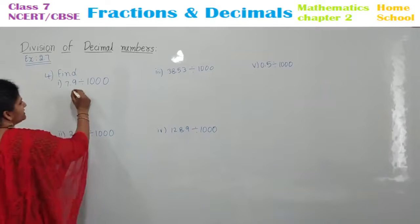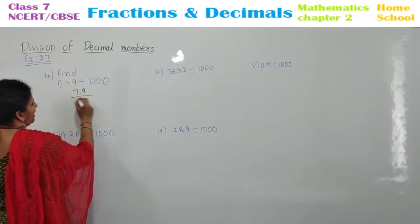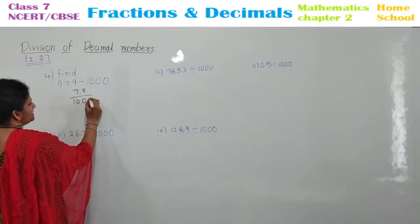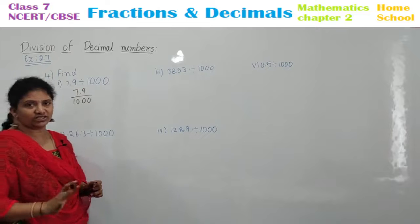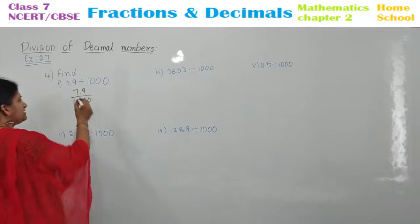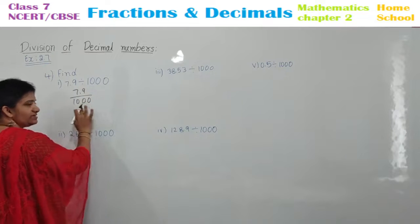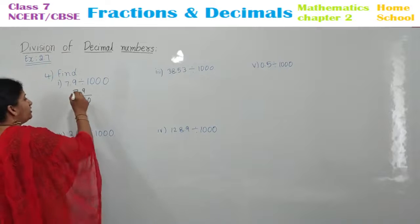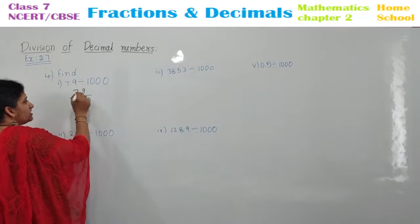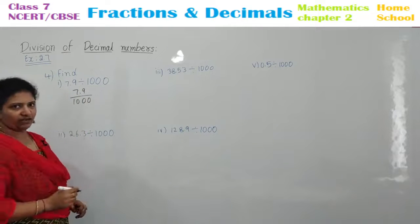Look here: 7.9 divided by 1000. Same pattern, children — it won't change. This decimal point will be shifted. There are three zeros, right? After three values, this point is shifted to this side.